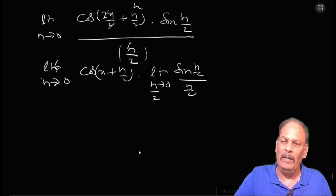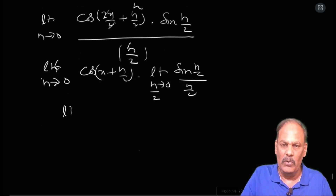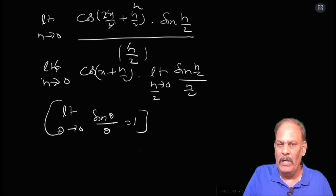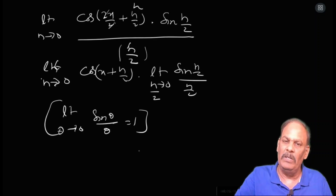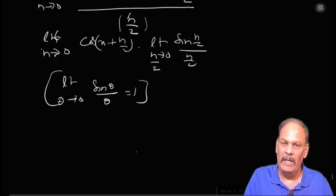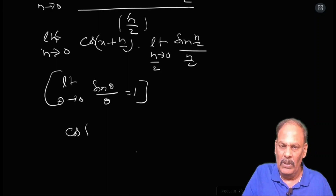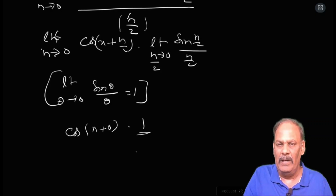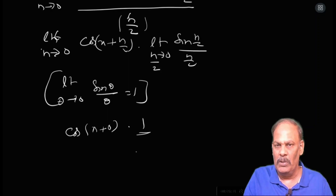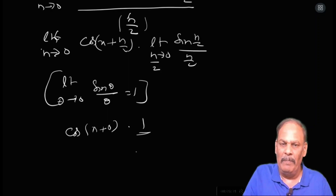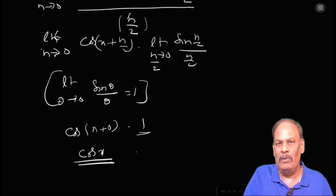Using the standard formula — limit theta tends to 0 of sin θ / θ equals 1 — we get: limit h/2 tends to 0 of sin(h/2) / (h/2) equals 1. Substituting h = 0 in the remaining part: cos(x + 0) × 1 equals cos x. Therefore, the differentiation of sin x equals cos x. That sum is complete.